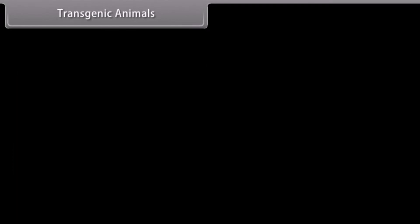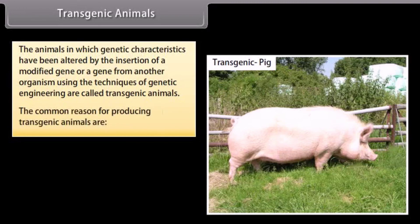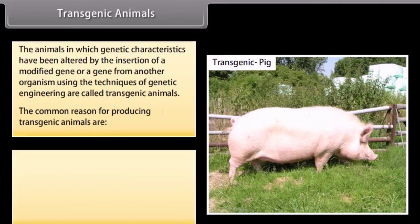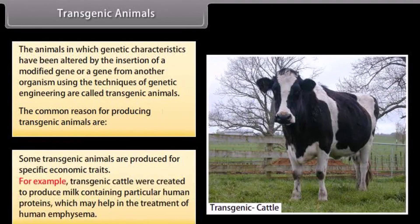Transgenic animals: animals in which genetic characteristics have been altered by the insertion of a modified gene or a gene from another organism using techniques of genetic engineering are called transgenic animals. Some transgenic animals are produced for specific economic traits. For example, transgenic cattle were created to produce milk containing particular human proteins which may help in the treatment of human emphysema.